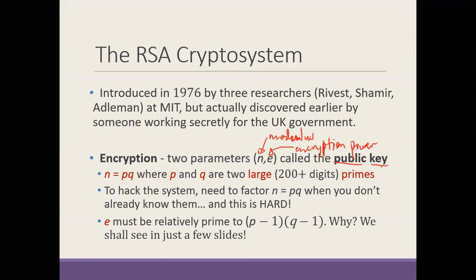Everyone would have a public key — I would have one, Hannah would have one, all of us would have a public key. If I want to send a message to Hannah, I would look up her public key, encrypt my message, and send it to her. That's how this works. Whoever I want to send the message to, I look up their public key, which everybody can see, encrypt my message, and send it. It would not be in danger of being decrypted.